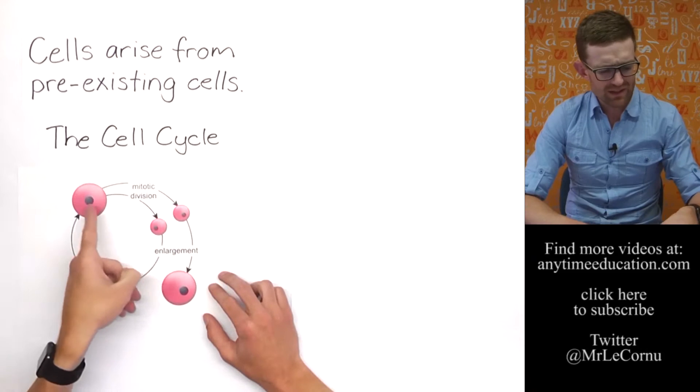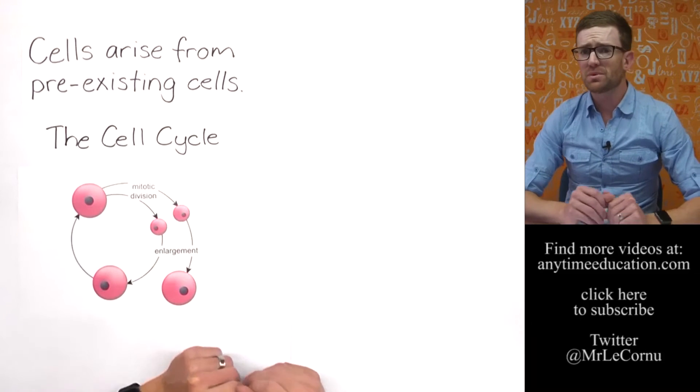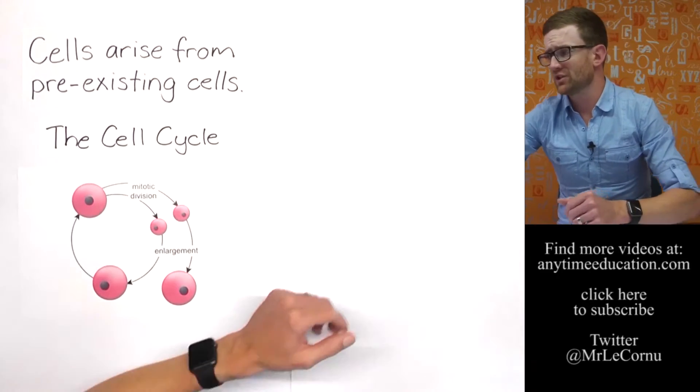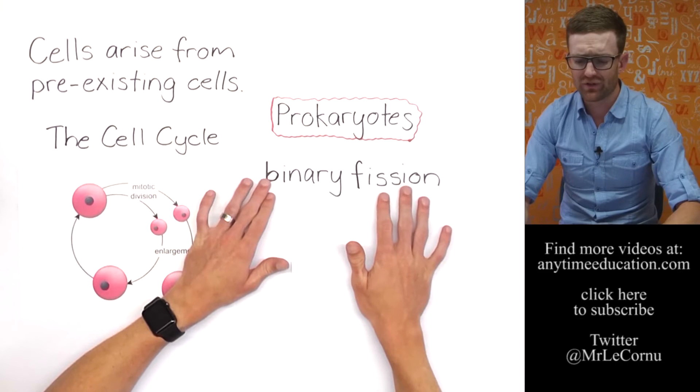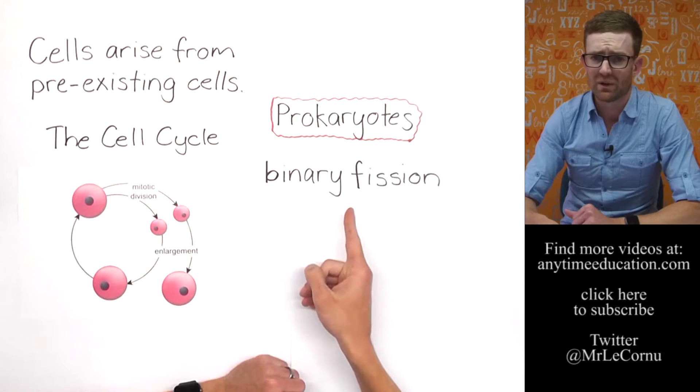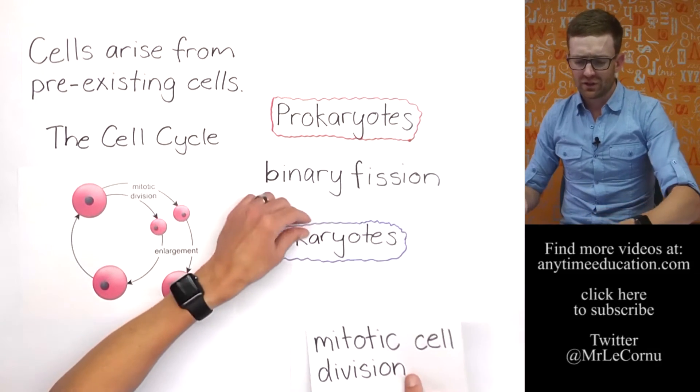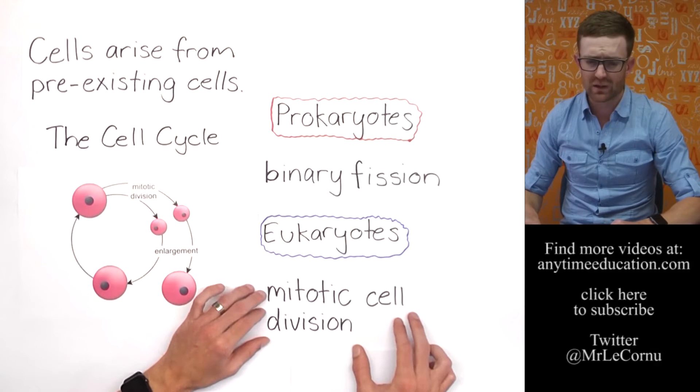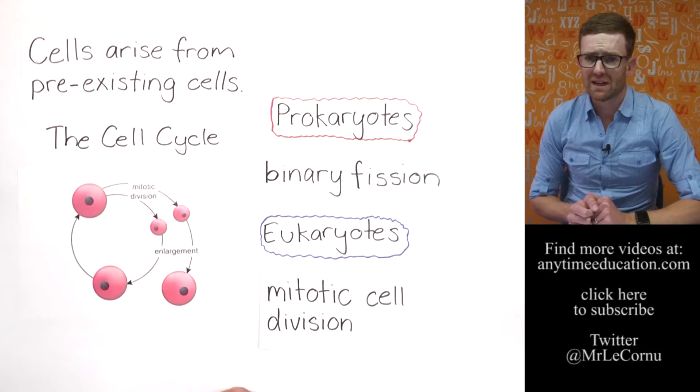So when we get to the division part, prokaryotes have their own particular way of producing new cells. They use a process called binary fission. I've made a video on binary fission, so go ahead and check that one out if you haven't already. But eukaryotes use mitotic cell division to produce new cells, and it's mitosis that we're going to look at today.